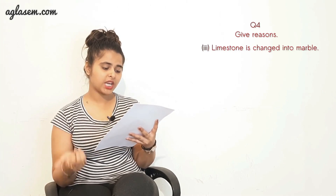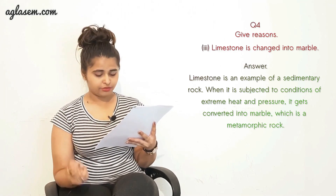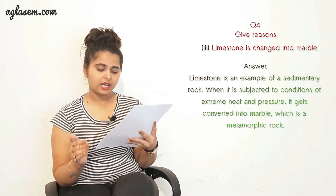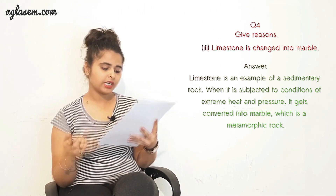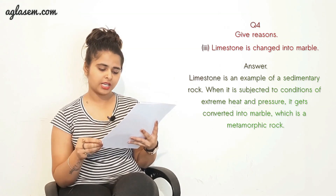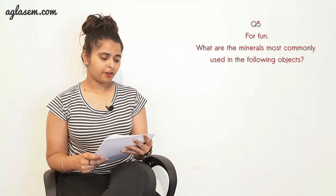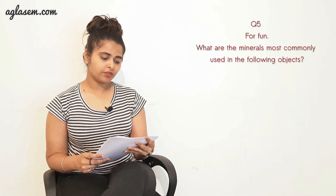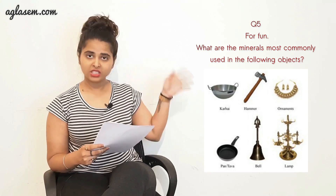Part three: Limestone is changed into marble. Limestone is an example of a sedimentary rock. When it is subjected to conditions of extreme heat and pressure, it gets converted into marble, which is a metamorphic rock. Now the fifth question is a fun activity - What are the minerals most commonly used in the following objects?